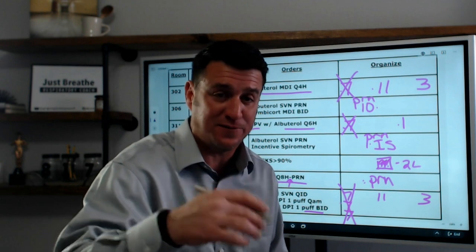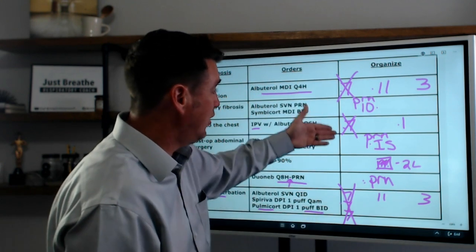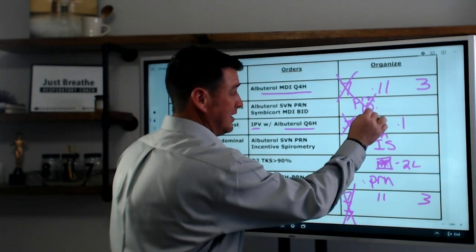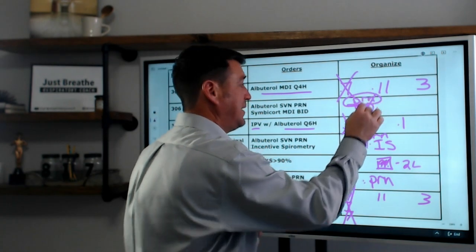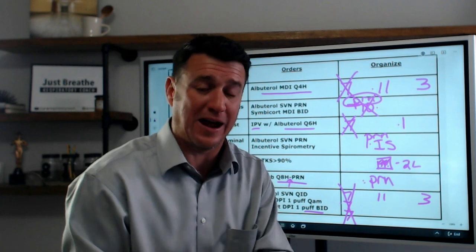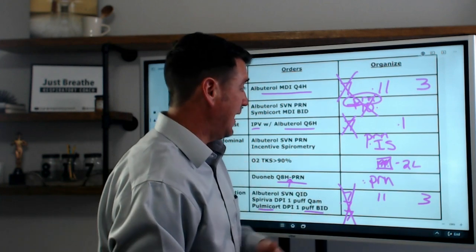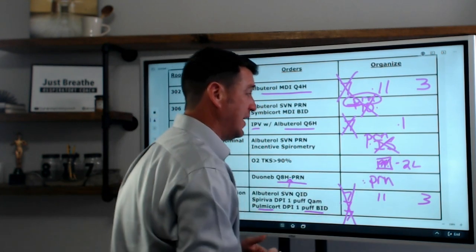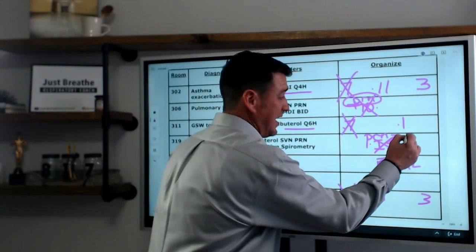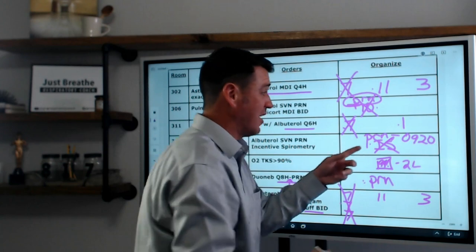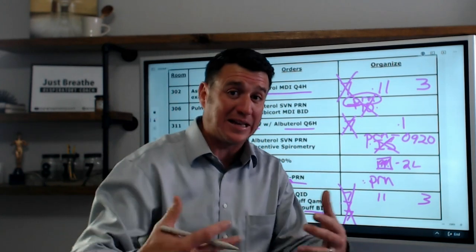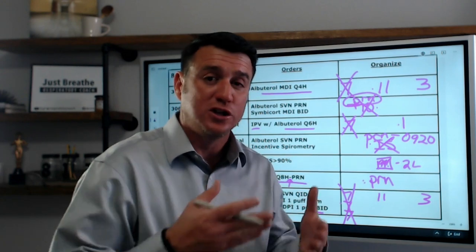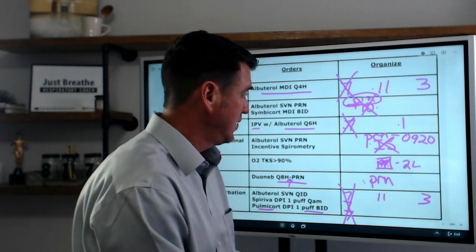As I see patients, I X them off. If I saw them at 7 or 8:50, I'll put that time. Now I've got those done. I go back to see the maintenance medication — did they need a PRN? No, they did not. I circle the PRN and document that I gave the maintenance inhaler but not the PRN. Then I'll go see the IS patient, mark that off, and document. If they did need a PRN — say at 9:20 — I note that and may look at getting that PRN changed to a scheduled dose.